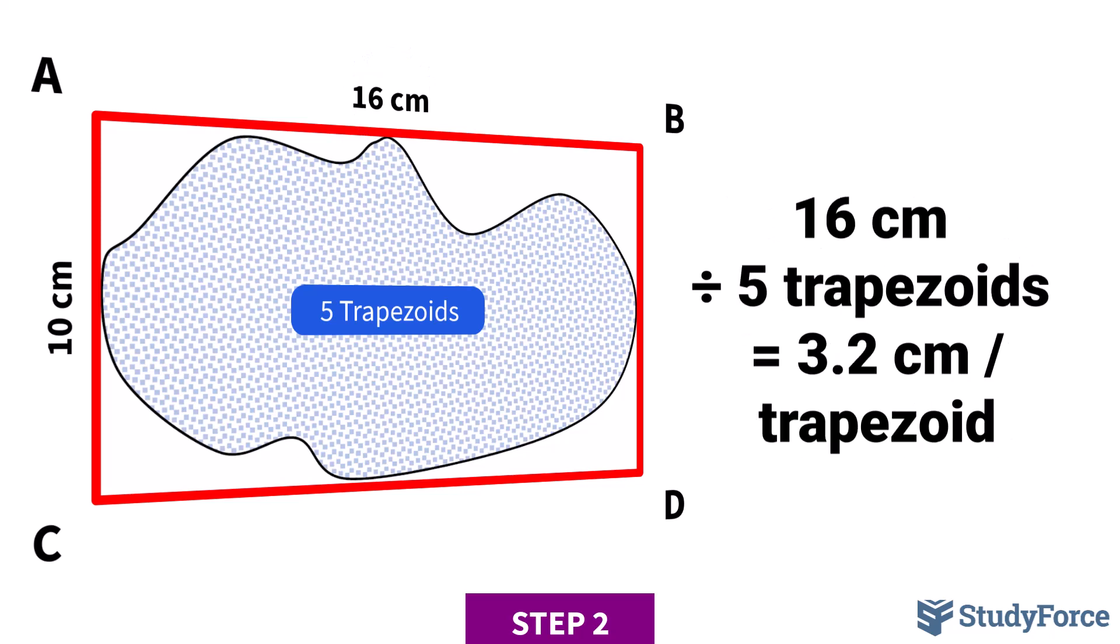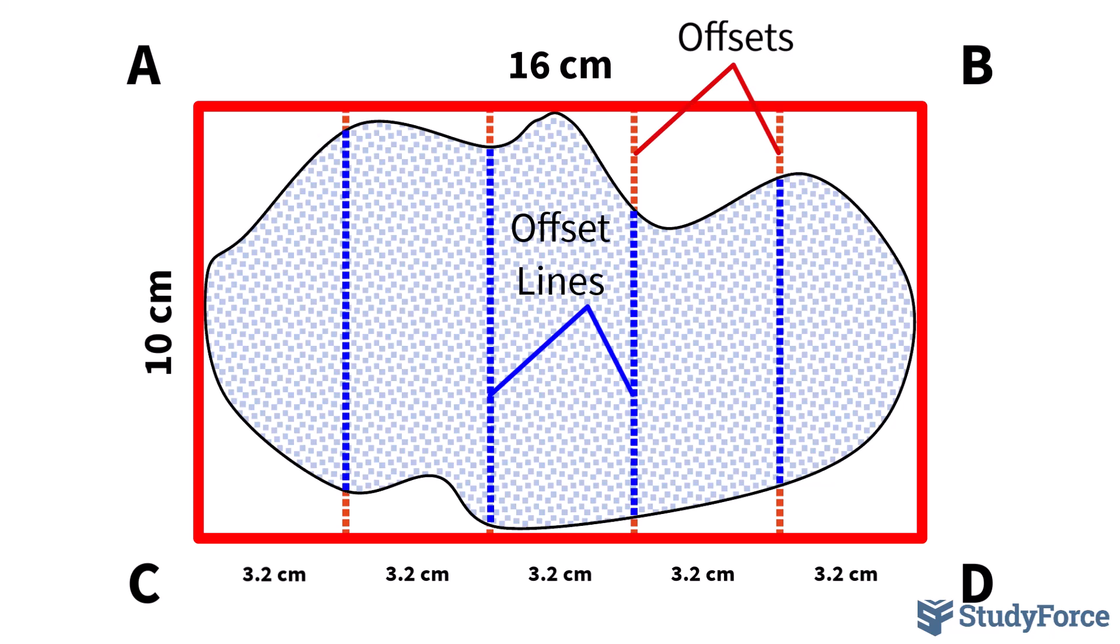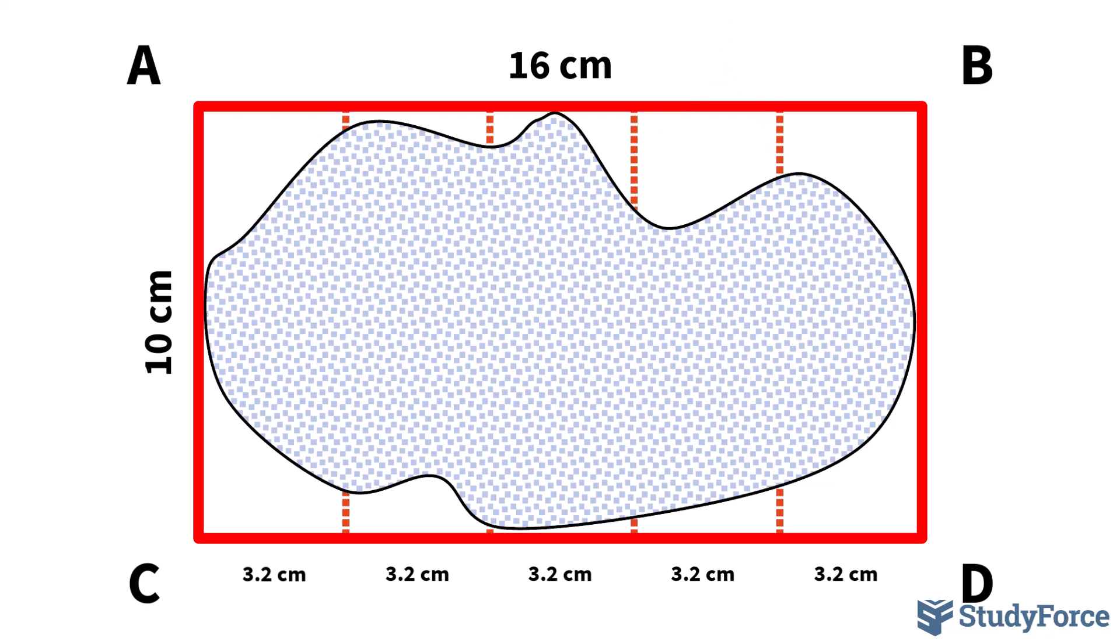For us, that's 16 centimeters divided by 5, which gives us 3.2 centimeters. This number means our offsets and offset lines will be placed 3.2 centimeters apart. This number will also serve as our common trapezoid height when applying the trapezoidal rule later on.